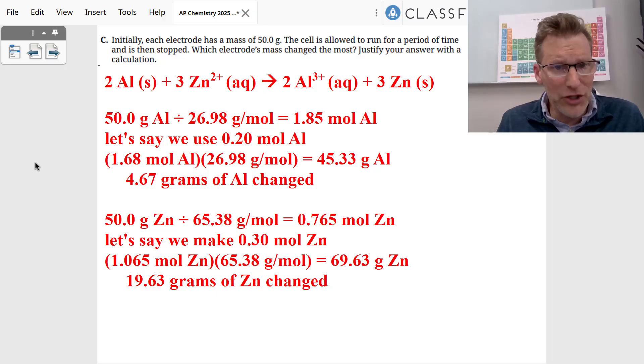If we use 0.2 moles, we went from 1.85 moles down to 1.68, which means we actually just went to 45.33 grams of aluminum. We only use 4.67 grams of aluminum is changed.